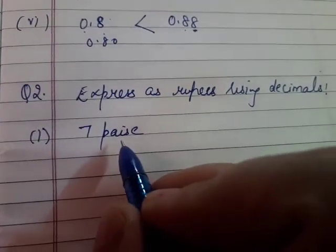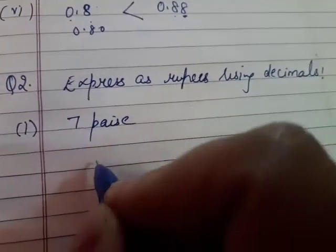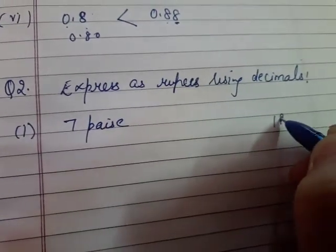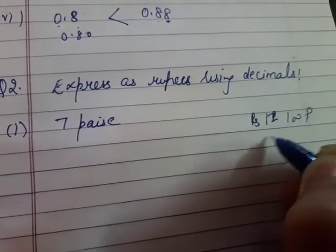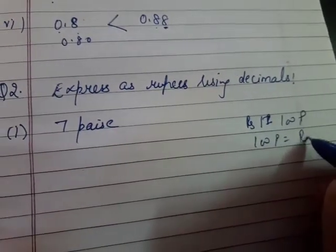Paisa is less than rupees. One rupee has how many payasas? One rupee me kitne payasay hoti hai? That is hundred payasas. Means hundred payasas se kya banta hai? One rupee banta hai.